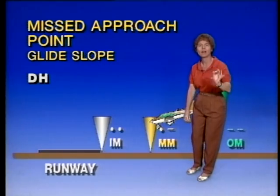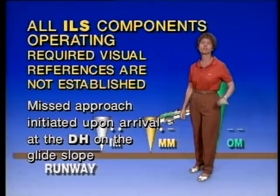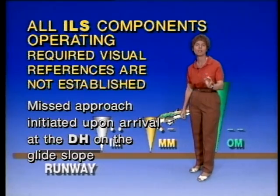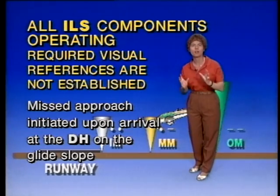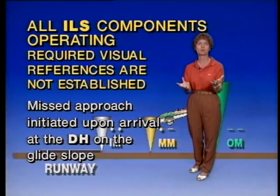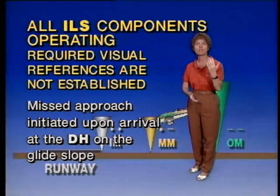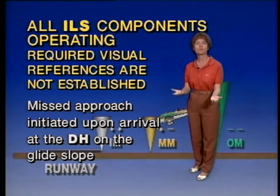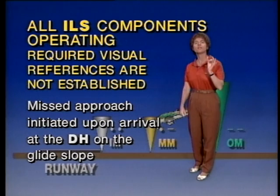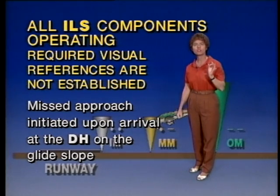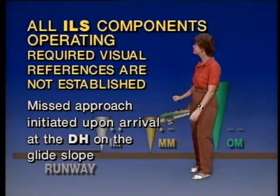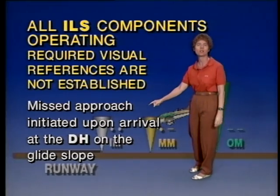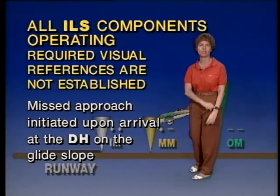So if all of the ILS components are operating and the required visual references are not established — such as the approach lights or something like that — then the missed approach should be initiated when you arrive at your Decision Height on the glide slope.